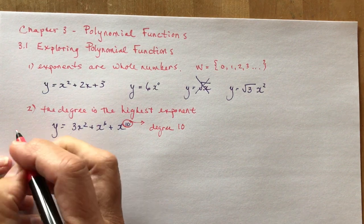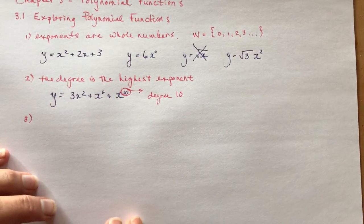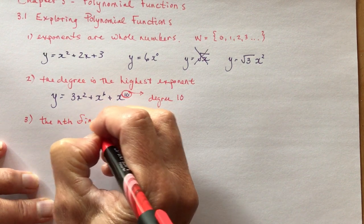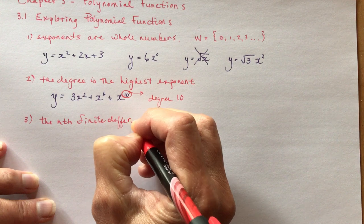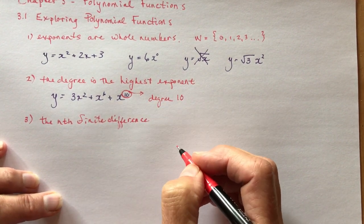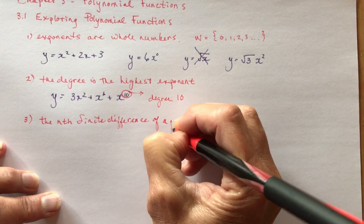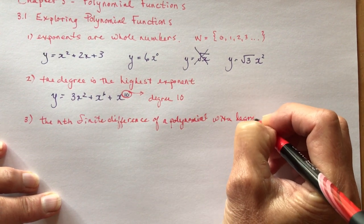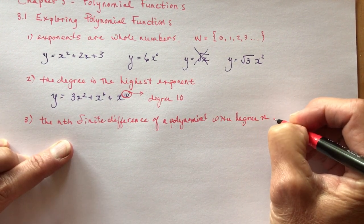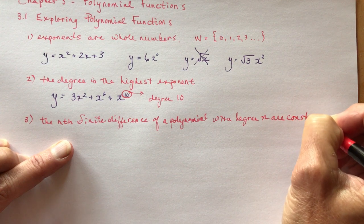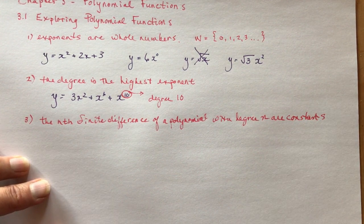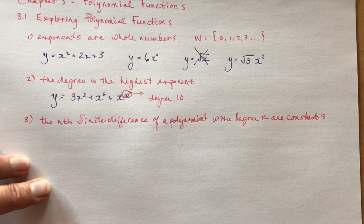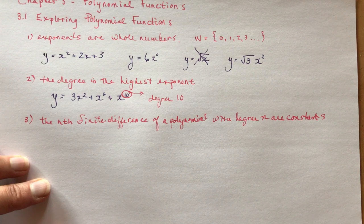Now, remember in grade 10, you started doing finite differences. The nth finite difference of a polynomial with degree n are constants. Do you remember when you did linear functions and you did the differences and you got a number? And then when you had a quadratic function, if you took the second difference, you would get a constant. If it's a cubic function, the third difference will give you a constant.